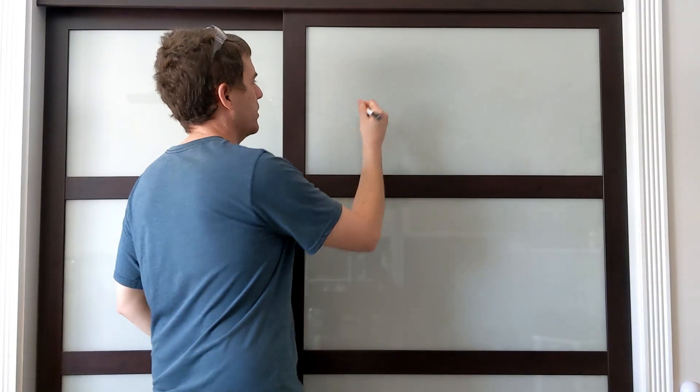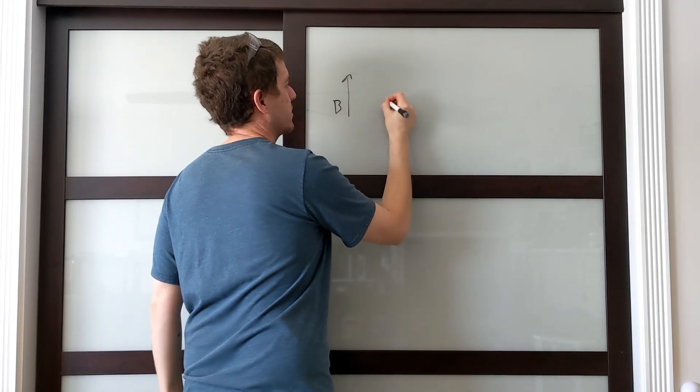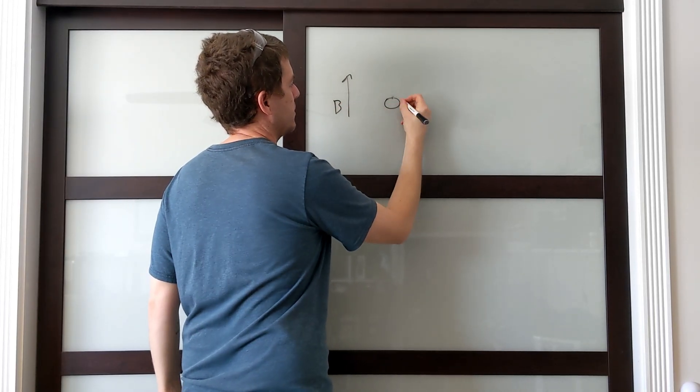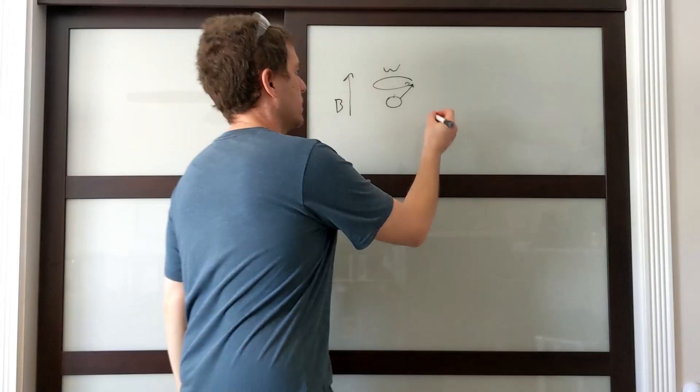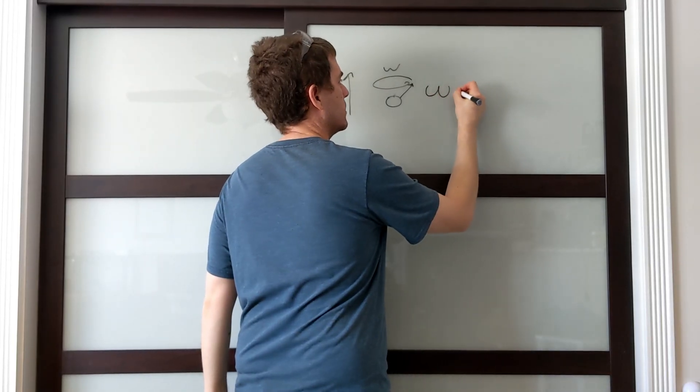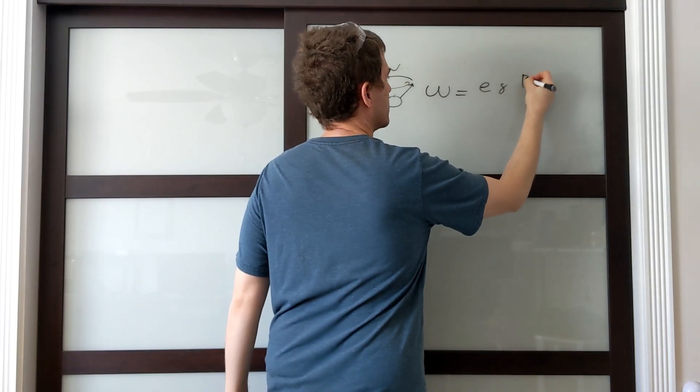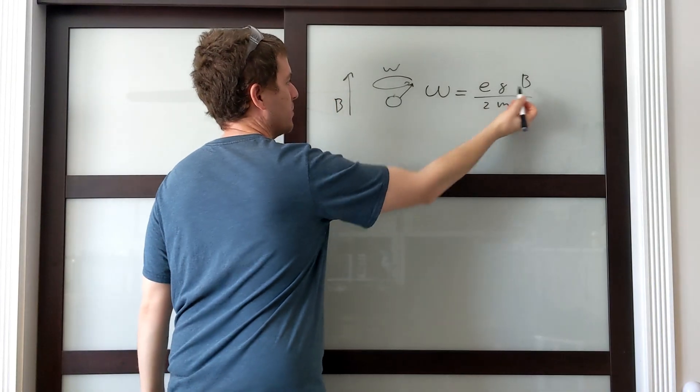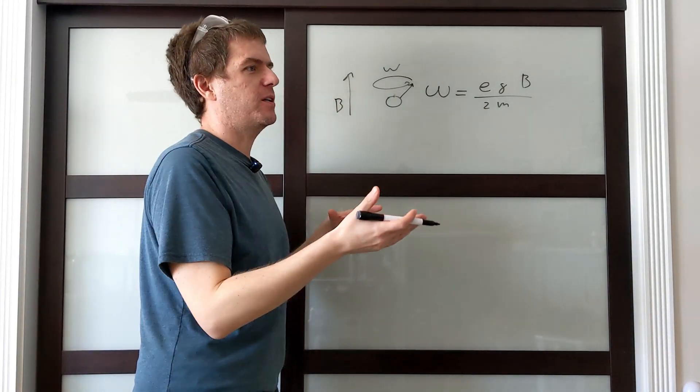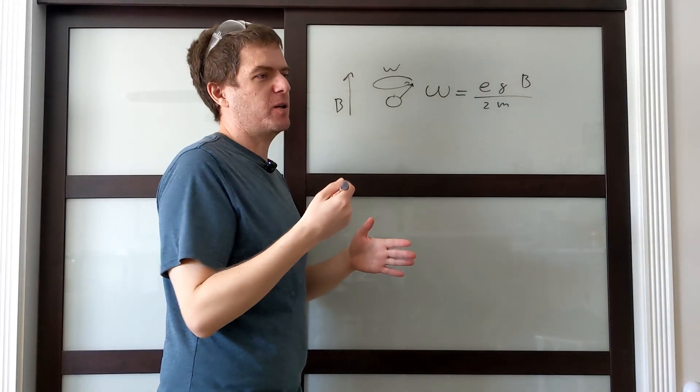All right, so then how does an MRI machine work? Well, we know that for a certain magnetic field, we have a certain precession speed—we call that the Larmor frequency omega. So omega equals E·G·B over 2m. B is the magnetic field, so a stronger magnetic field will cause the particle to precess faster.